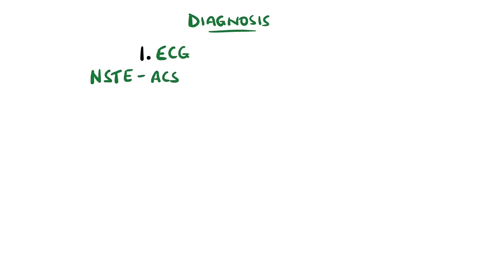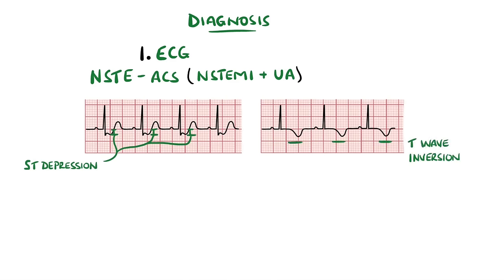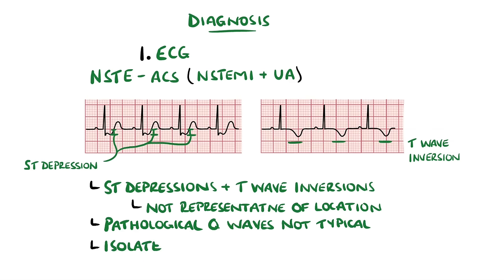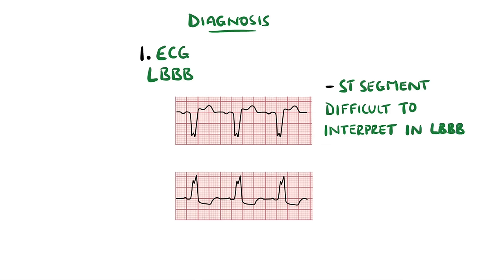In non-ST elevation acute coronary syndrome, which includes both NSTEMI and unstable angina, the hallmark is ST depressions and T-wave inversions. In contrast to STEMI, these changes do not necessarily represent the affected vessels. Q-waves are typically not present, which also coincides with the fact that NSTEMIs are smaller infarctions than STEMIs generally. T-wave inversions alongside ST-segment changes indicate ongoing ischemia. However, isolated T-wave inversions are post-ischemic, meaning they occur after the ischemic episode. Remember that the ST-segment is especially challenging in paced or known left bundle branch blocks, which is where criteria such as the Sgarbossa criteria are used. In rare cases, the ECGs can be normal.